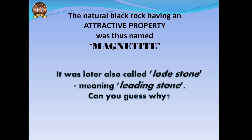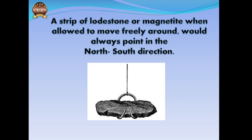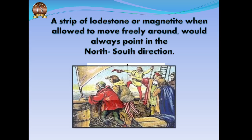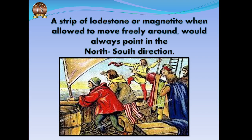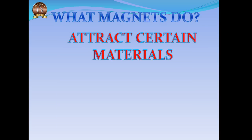Magnetite is later also called lodestone. The meaning of lodestone is 'leading stone.' A strip of lodestone or magnetite, when allowed to move freely — for example, hung onto a hook — was found to always orient in the north-south direction. This was very useful for navigators to find their way around the seas, which is why lodestone, meaning 'leading stone,' was another name given to magnetite.